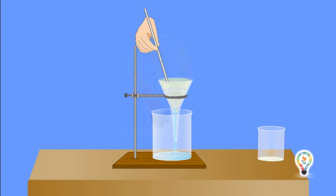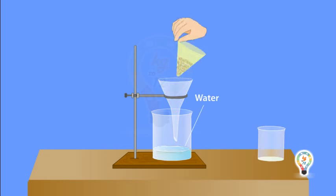You will observe that clear water will get collected in the beaker and the sand will remain on the filter paper. The pure water collected is called filtrate. This method of purifying water is called filtration.